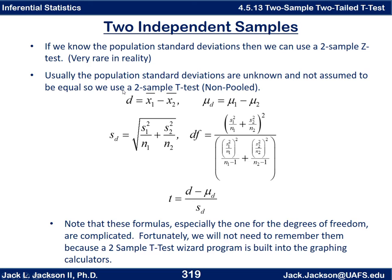The t-statistic is formed by taking the difference minus mu of the difference, divided by s sub d. That gives you a t-statistic and it's distributed by a t-distribution. The degrees of freedom follow a rather complicated formula — this is what's called the non-pooled version. In an earlier video we talked about a pooled version versus a non-pooled version when we did two sample t-intervals, and it's the same formulas there.